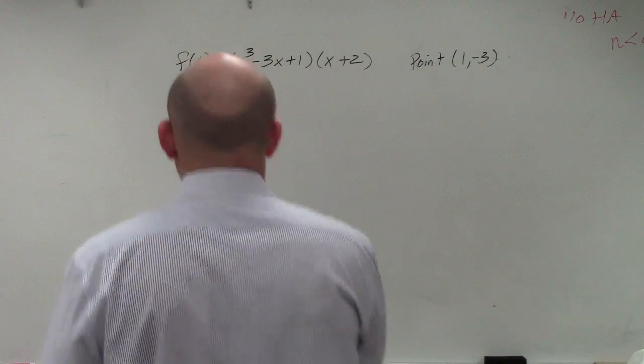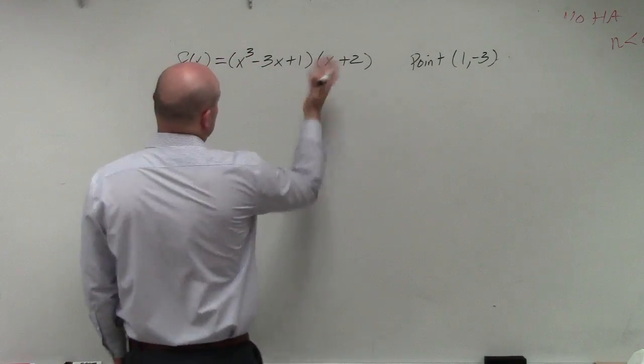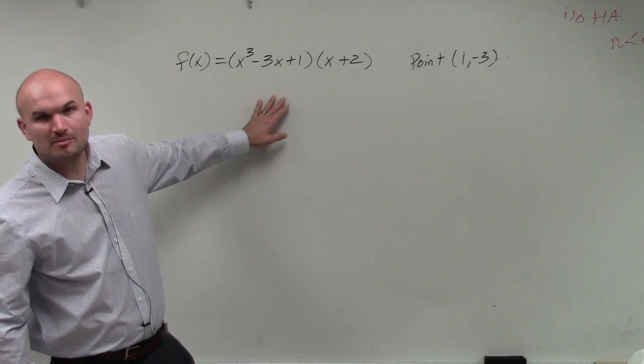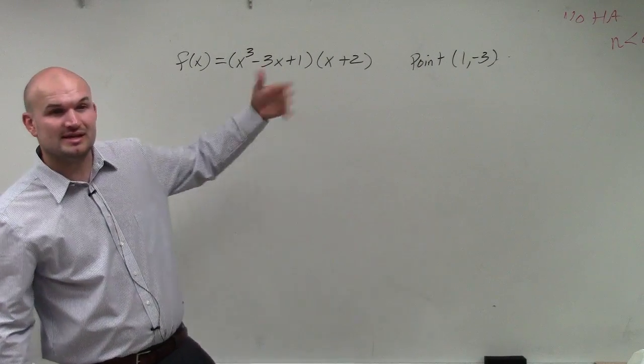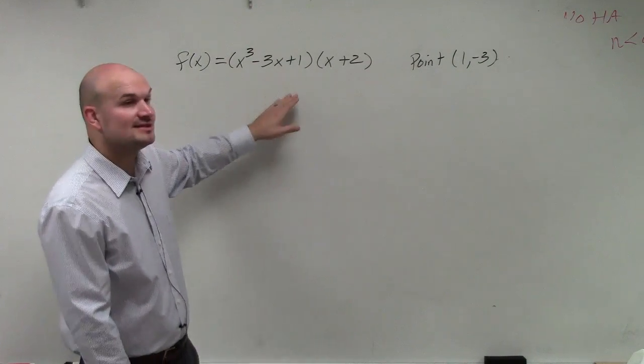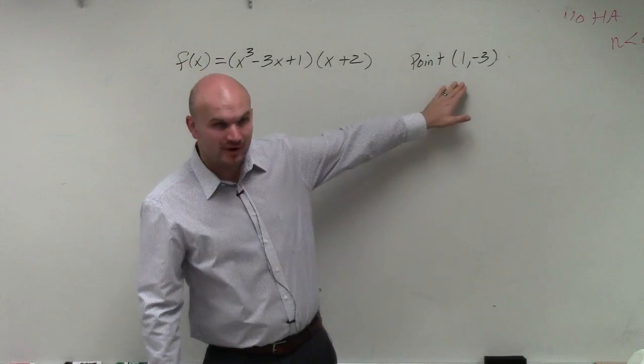Or you could simply multiply this out. This isn't so bad to multiply out. You could easily just apply the distributive property and then multiply it out. But again, remember the main thing: to write the equation of the line, we need to find the derivative, right? We need to find that slope at this given point.